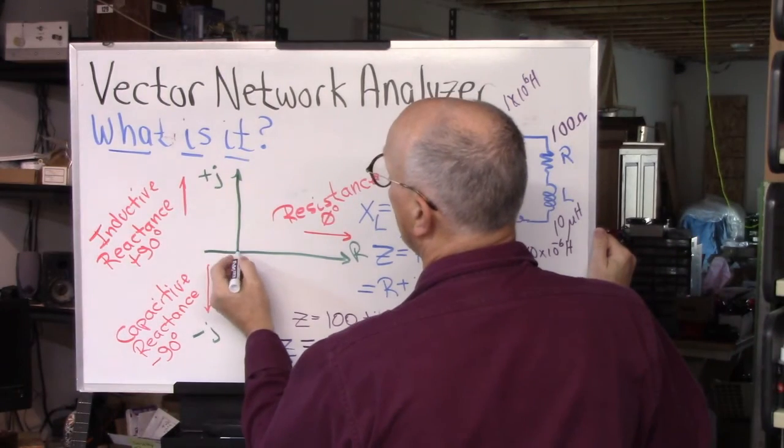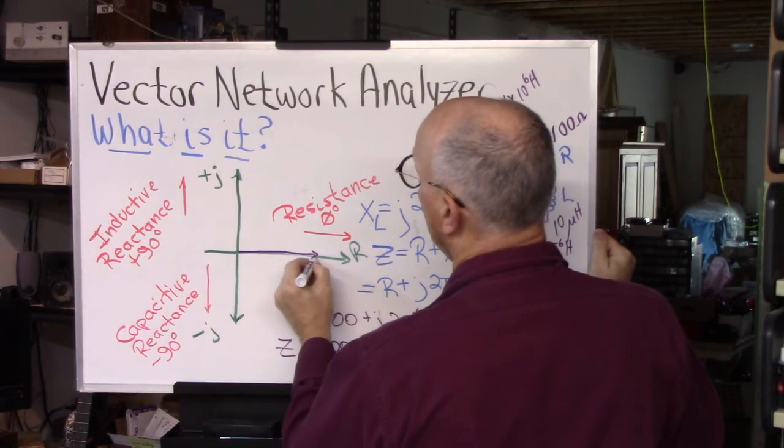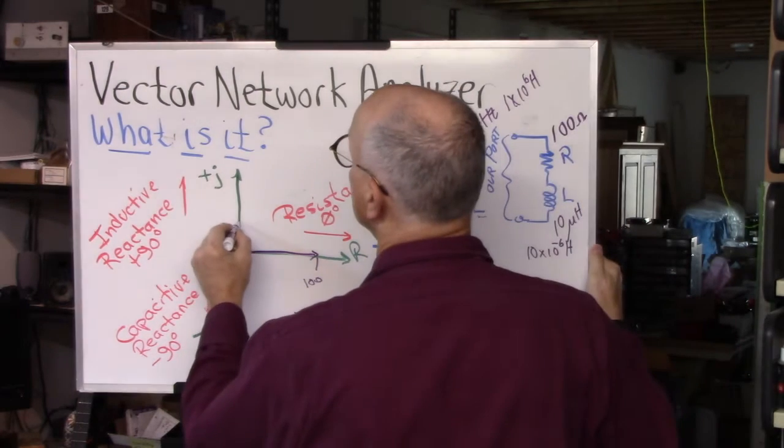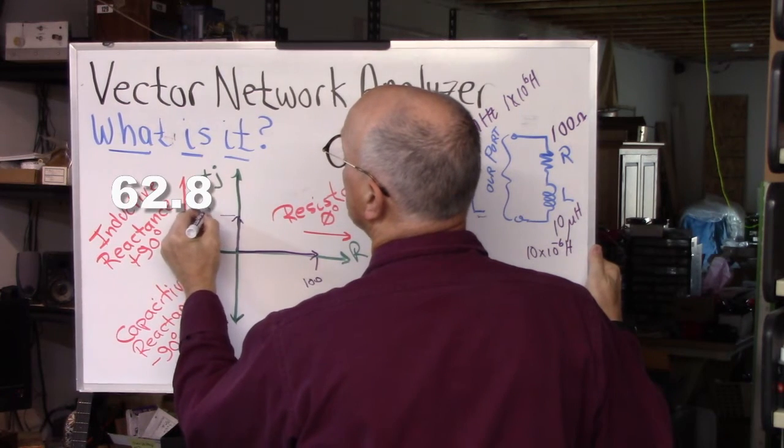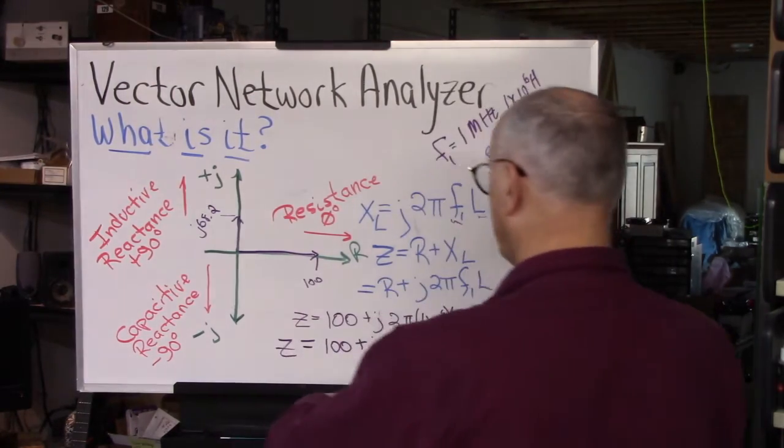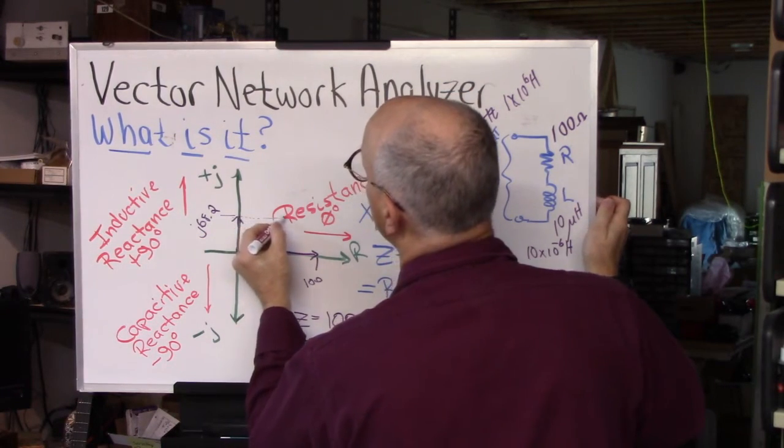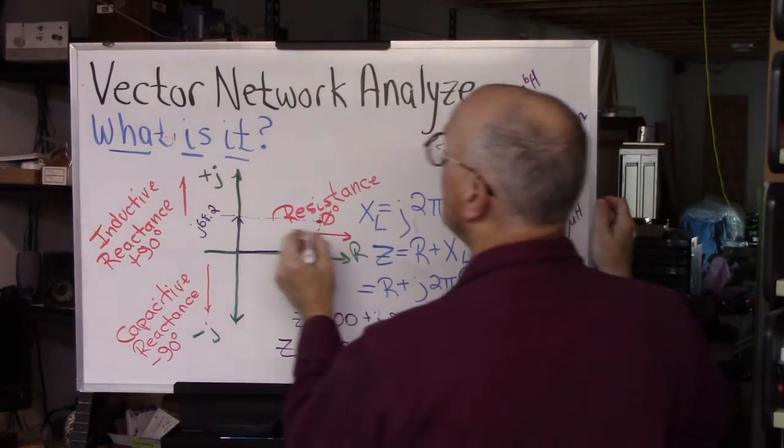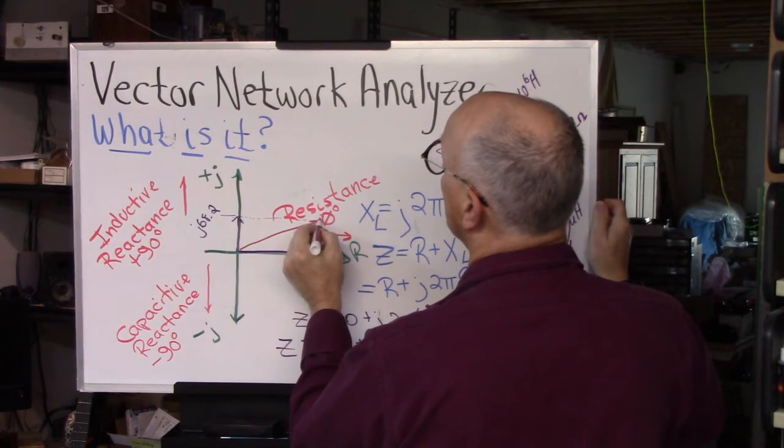Well, we come out here and we plot our resistance on this axis. We go out 100, out this way, and then this is a plus j 68.2. So we come up here to 68.2 for the inductive reactance. Now getting our vector, what we're going to do is we're going to draw a little dotted line over this way. We're going to draw a little dotted line down this way. And that gives us a place where they meet right here. And the vector is that line that goes from the origin out to the point where those two lines meet.